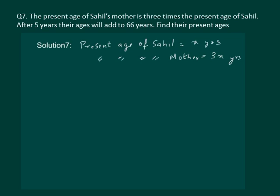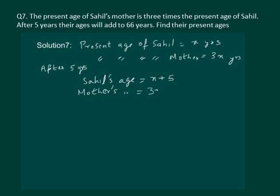The next sentence reads: after 5 years their ages will add to 66 years. So what will happen after 5 years? After 5 years, Sahil's age would be x plus 5 and his mother's age will be 3x plus 5.